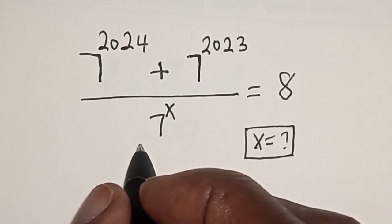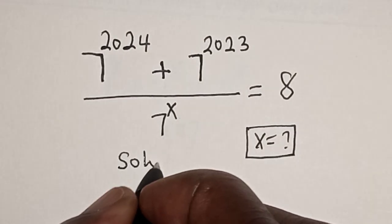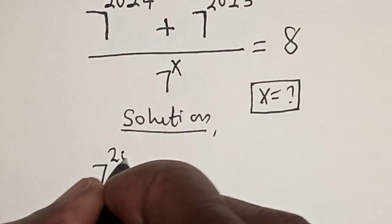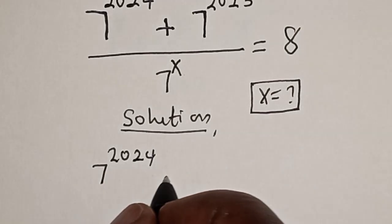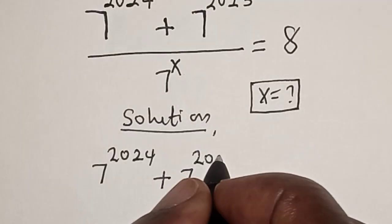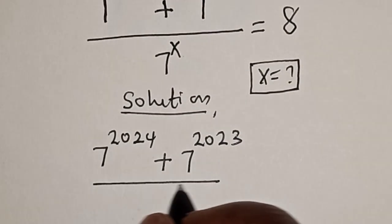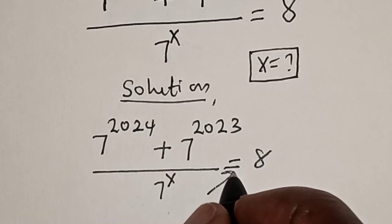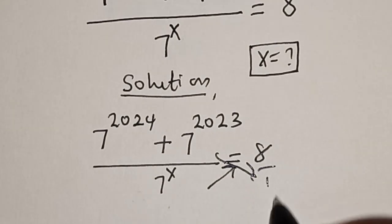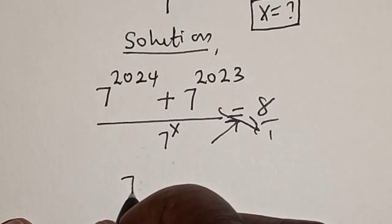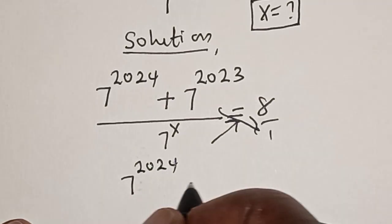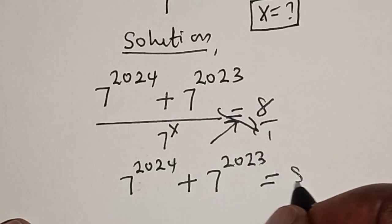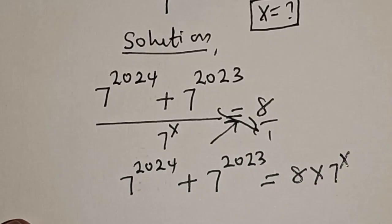Solution: 7 raised to power 2024 plus 7 raised to power 2023, divided by 7 raised to power x, is equal to 8. Let's cross multiply — this is over 1 — then 7 raised to power 2024 plus 7 raised to power 2023 is equal to 8 multiplied by 7 raised to power x.